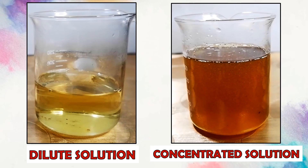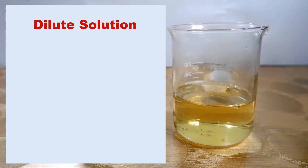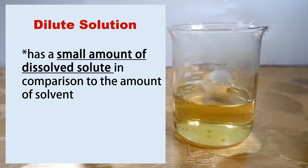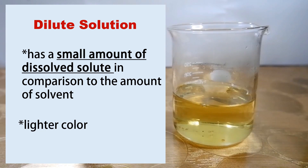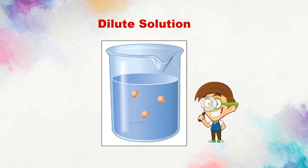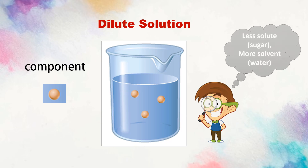Let us first discuss the dilute solution. Dilute solution has a small amount of dissolved solute in comparison to the amount of solvent. The color of dilute solution is lighter compared to the color of concentrated solution. Looking closely at the particles, the components represented by the orange circle are the particles of solute or sugar dissolved in water. There is a small amount of solute or sugar in comparison to the amount of solvent or water — it has less solute and more solvent.